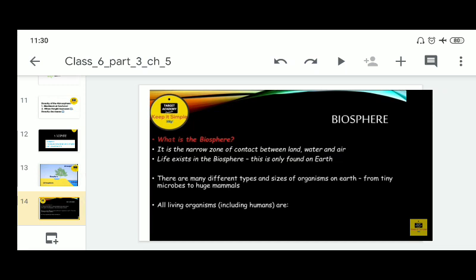Let's revise what is the biosphere. It is a narrow zone of contact between land, water and air. Life exists in the biosphere. This is only found on earth. That is why our earth is called unique planet. There are many different types and sizes of organisms on earth from teeny microbes to huge mammals like blue whale. All living organisms including humans can survive here.